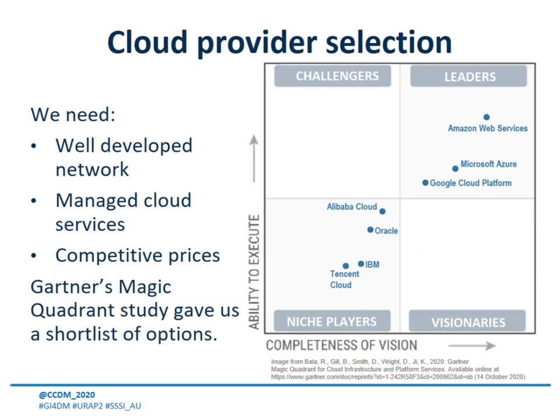For this study, we didn't have the funds or expertise to develop our own cloud network. Similarly, South African disaster risk management is noted by literature to be underfunded, so a good commercial cloud provider is important. Ideally, it should have activity in and around South Africa, effective managed cloud services, and an acceptable price range. Gartner's Magic Quadrant, displayed on the right, is from an industry provider review and gave us a shortlist of the three leading cloud providers: Amazon Web Services or AWS, Microsoft Azure, and Google Cloud Platform or GCP.